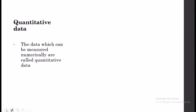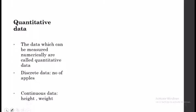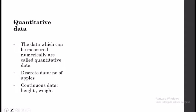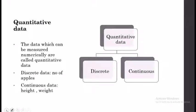Quantitative data: data which can be measured numerically is called quantitative data. For example, the number of apples in a basket, the height and weight of students in your college or class, or the height and weight of members in your family — these all constitute examples of quantitative data. Quantitative data is again divided into two: discrete data and continuous data.